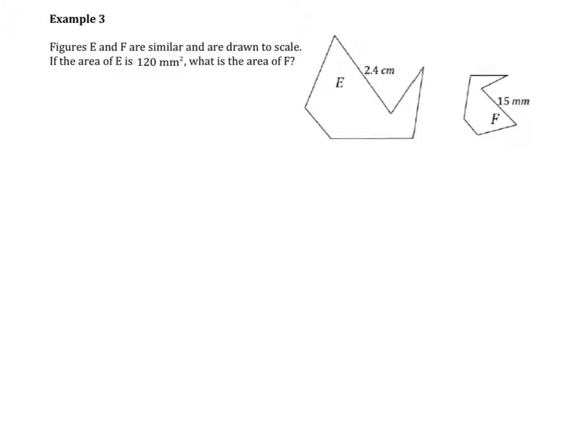Example three. Figures E and F are similar and are drawn to scale. If the area of E is 120 square millimeters, what is the area of F? When I look at both of these diagrams, I see that the first diagram E is larger than the second diagram F. And I see 2.4 and 15. Curiosity just strikes me that 2.4 is a number that's less than 15. Is it supposed to have bigger dimensions? Of course, it's in terms of centimeters versus millimeters. So it is bigger even though 2.4 is smaller than 15. What I need to do is convert 2.4 centimeters to millimeters.